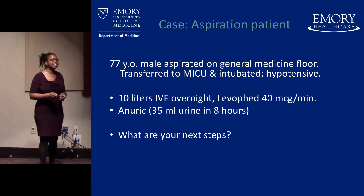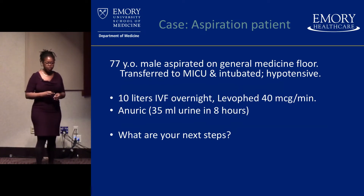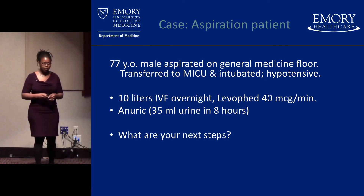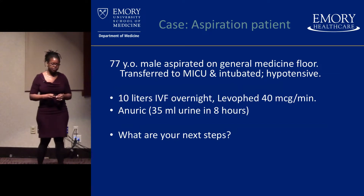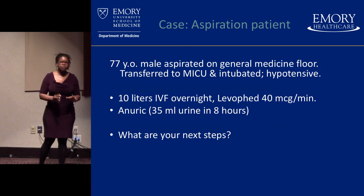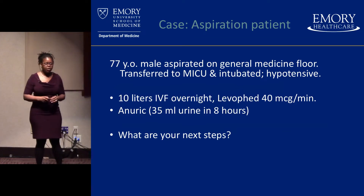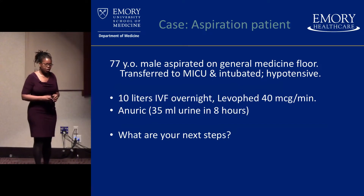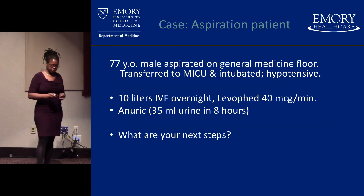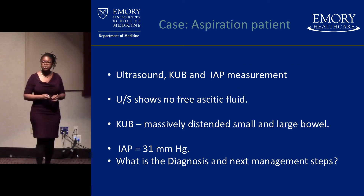Let's take the next case. We have a 77-year-old male who aspirated on the general medicine floor, transferred to the MICU, and was intubated and hypotensive. Lots of fluid resuscitation — they're very anasarcic. Now they're on the ventilator and they're enduring. What are your next steps? Let's get an ultrasound, KUB, and do an intra-abdominal pressure measurement.